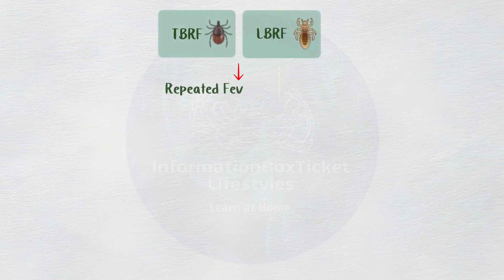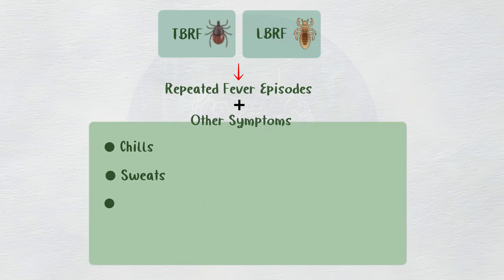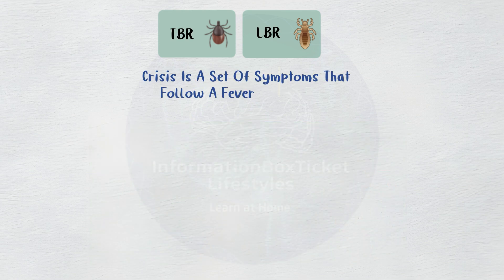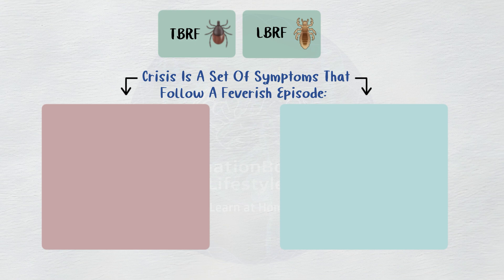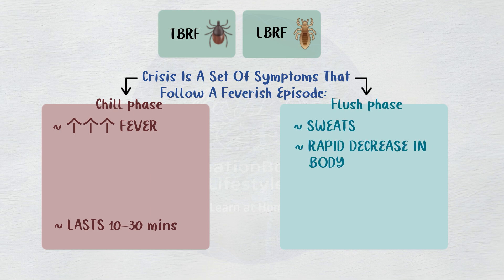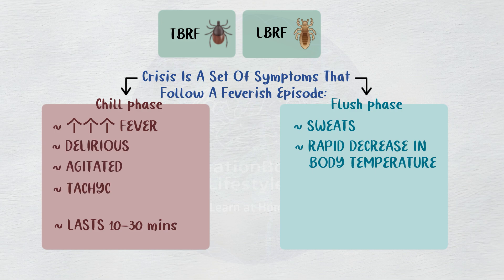The common symptoms of both types of relapsing fever include repeated fever episodes along with chills, sweats, headaches, muscle and joint pain, altered sensorium, nausea, and diarrhea. A crisis is a set of symptoms that follow a feverish episode. Every crisis has two stages: a chill phase, which typically lasts 10 to 30 minutes and is marked by sweats, a sharp drop in body temperature, and hypotension. During this phase, patients may have delirium, agitation, tachycardia, and tachypnea in addition to a very high fever.